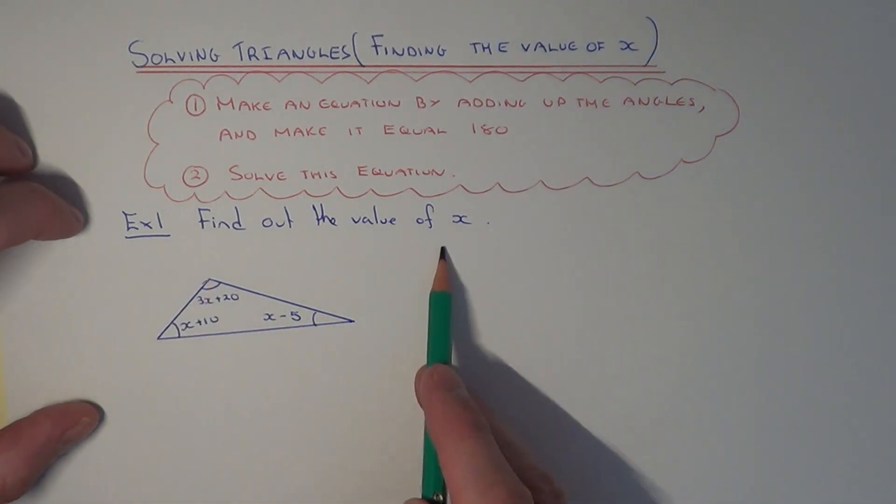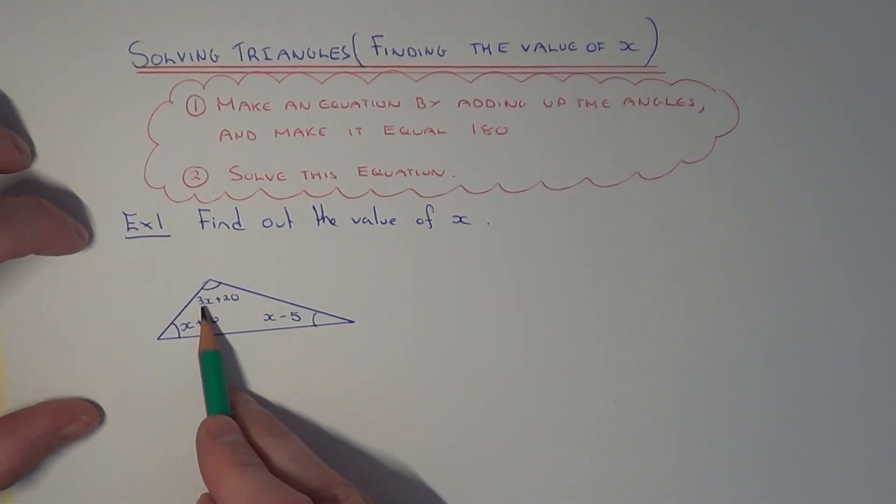Let's have a look at this example. We've got three angles: the biggest one is 3x plus 20, the next biggest one is x plus 10, and the smallest angle is x minus 5.